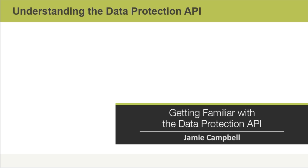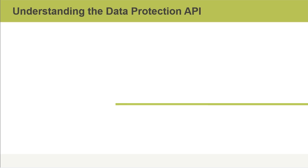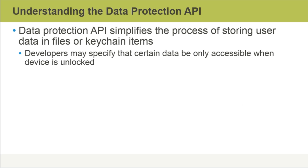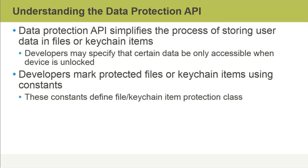In this video, I'll discuss getting familiar with the Data Protection API. The Data Protection API, short for Application Programming Interface, simplifies the process of storing user data in files or keychain items. It means that developers can restrict access to certain data by only making it accessible when a device is unlocked. Developers can mark protected files or keychain items using constants that define the file or keychain item protection class.